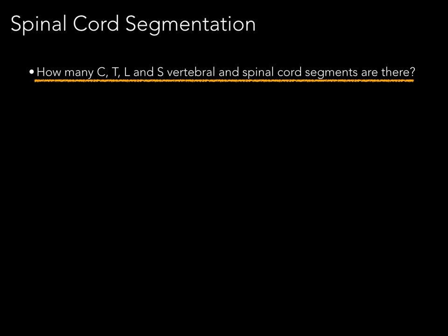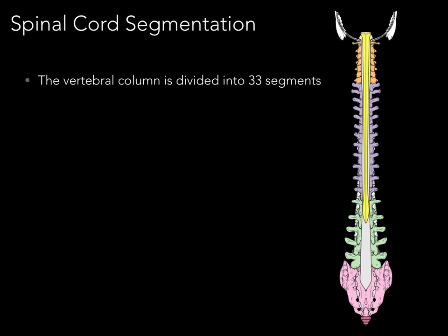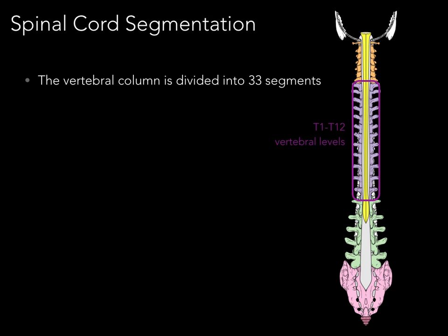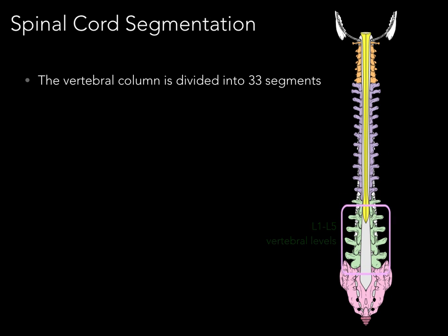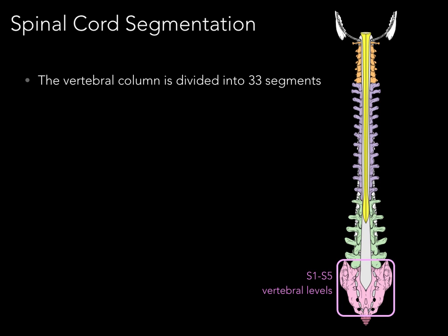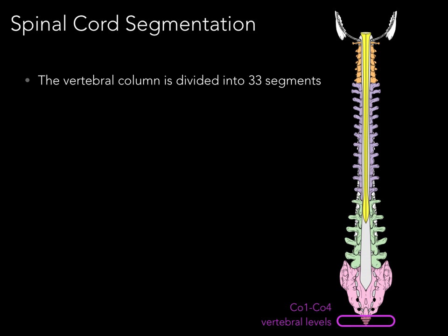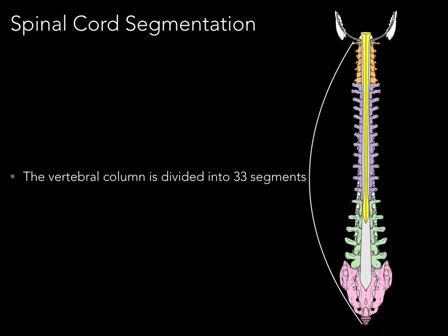How many cervical, thoracic, lumbar, and sacral vertebral and spinal cord segments are there? The vertebral column is divided into 33 segments: seven vertebral levels in the cervical region, 12 in the thoracic region, five in the lumbar region, five in the sacral region, and four tiny ones in the coccygeal region. Therefore, the vertebral column has 33 segments.